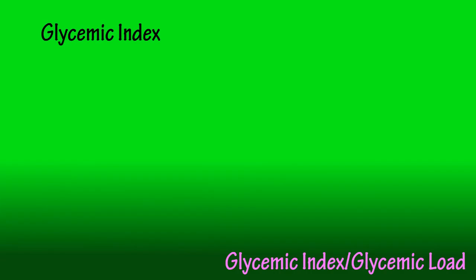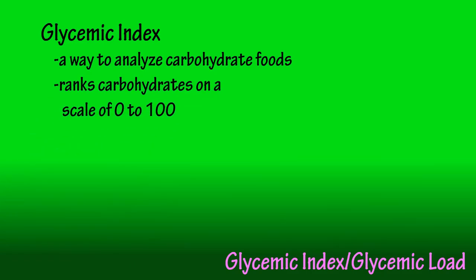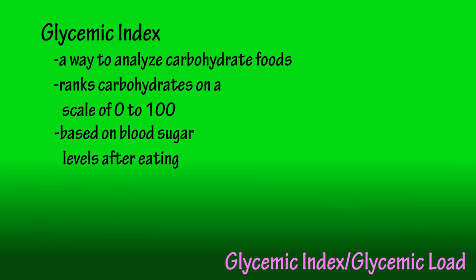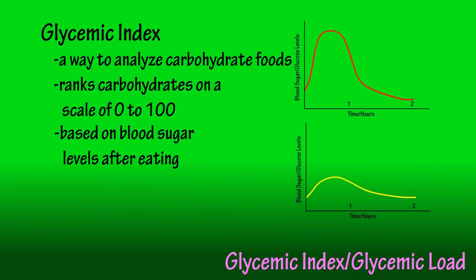So what is the glycemic index? It is a way to analyze carbohydrate foods based on their impact on blood sugar levels. The GI ranks carbohydrates on a scale of 0 to 100 based on how much they raise blood sugar levels after eating. Foods with a high GI are rapidly digested and absorbed, causing large fluctuations in blood sugar, while lower GI foods are more slowly digested and produce gradual rises.